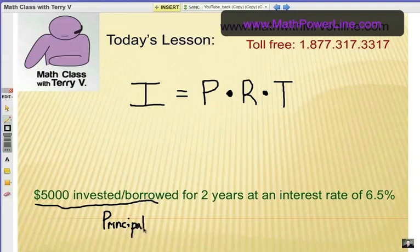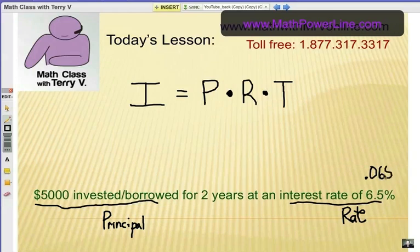That's a word you hear a lot when we talk about investing or borrowing money. The rate is the interest rate and that is a percent, and what you have to do is change it into a decimal. So you do a little bit of a converting here and that would be in this case .065. And the T is time, the time period that you are going to keep your money invested or the amount of time you are going to borrow it.